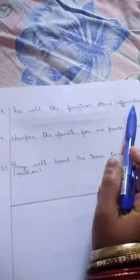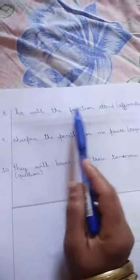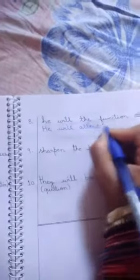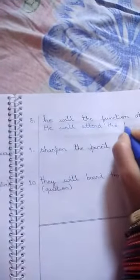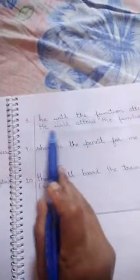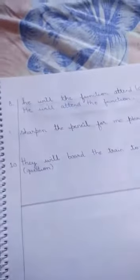The eighth statement: He will the function attend. It is an affirmative sentence — that is, a positive sentence. How will you change it? The answer is: He will attend the function. You will place a full stop at the end. It is an affirmative sentence.